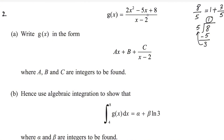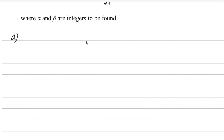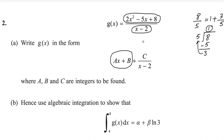We will apply this same method here using long division. This is the dividend and this is the divisor. We will get the whole number part, and the remainder will be written as the numerator with the divisor in the denominator — same method. Let us use long division to solve this question: 2x squared minus 5x plus 8 divided by x minus 2.